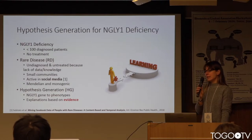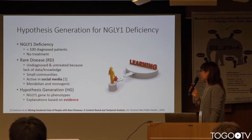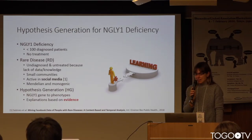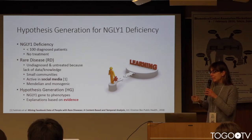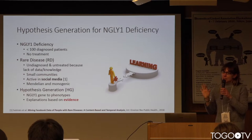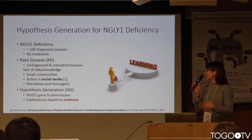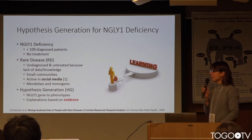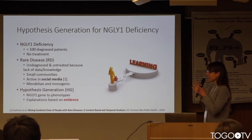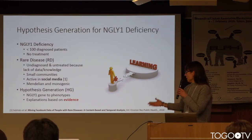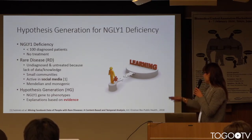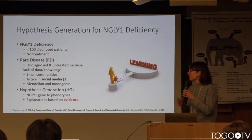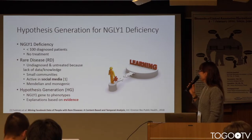Rare diseases are mostly undiagnosed and mostly don't have treatment, because they are so rare that there is a lack of knowledge and data. They are based on small communities, which means they don't have a lot of resources, but they are very active on social media to try to engage and find new potential patients with these rare diseases. In fact, there is starting to be publications on mining social media for orienting research on rare diseases, so there may be potential here.